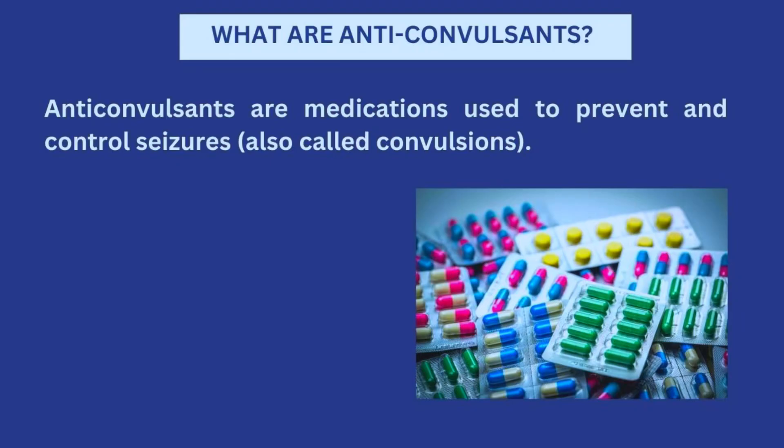Just to get right into it — what exactly are anti-convulsants? Anti-convulsants are a group of medications that are used to control or prevent seizures. These seizures are sometimes also called convulsions. So anti-convulsants — anti meaning to work against — convulsions, which are irregular body movements caused by irregular electrical activities within the brain.